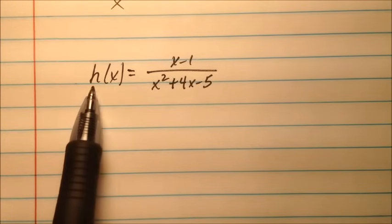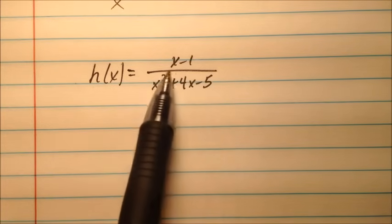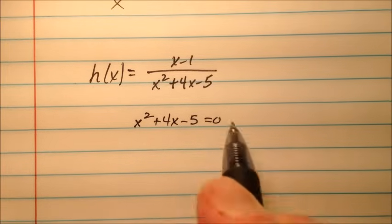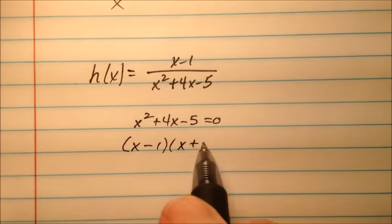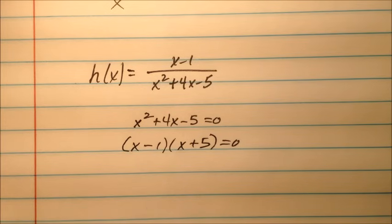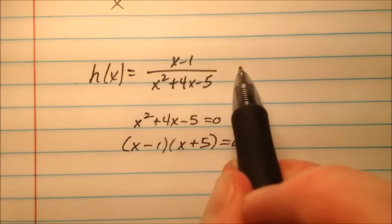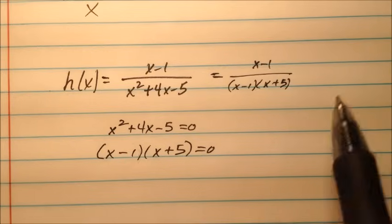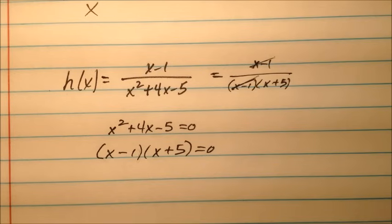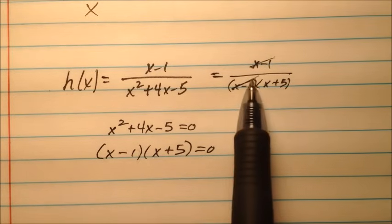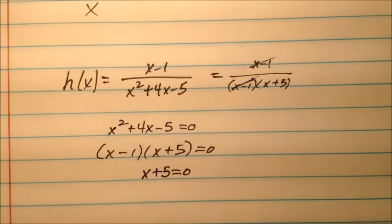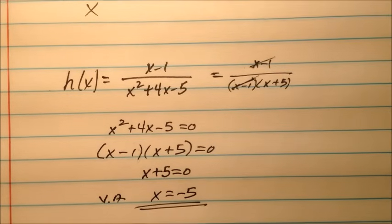Our sixth and final example is h of x equals x minus 1 over x squared plus 4x minus 5. Factoring the denominator gives x minus 1 times x plus 5. Notice x minus 1 also appears in the numerator, so they cancel — making x equals 1 a removable discontinuity, meaning there's a hole in the graph, not an asymptote. The only vertical asymptote comes from x plus 5 equals 0, so x equals negative 5.